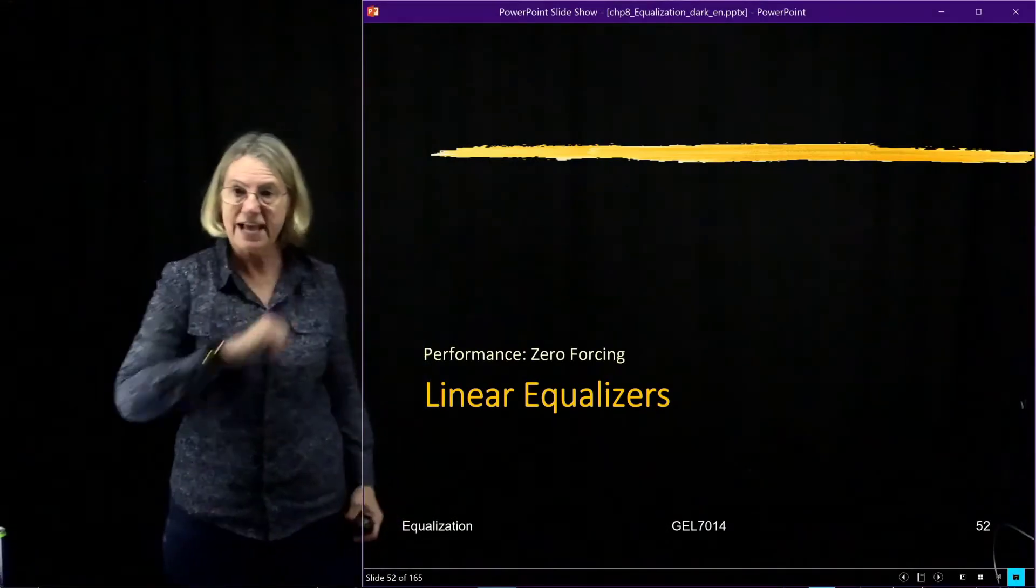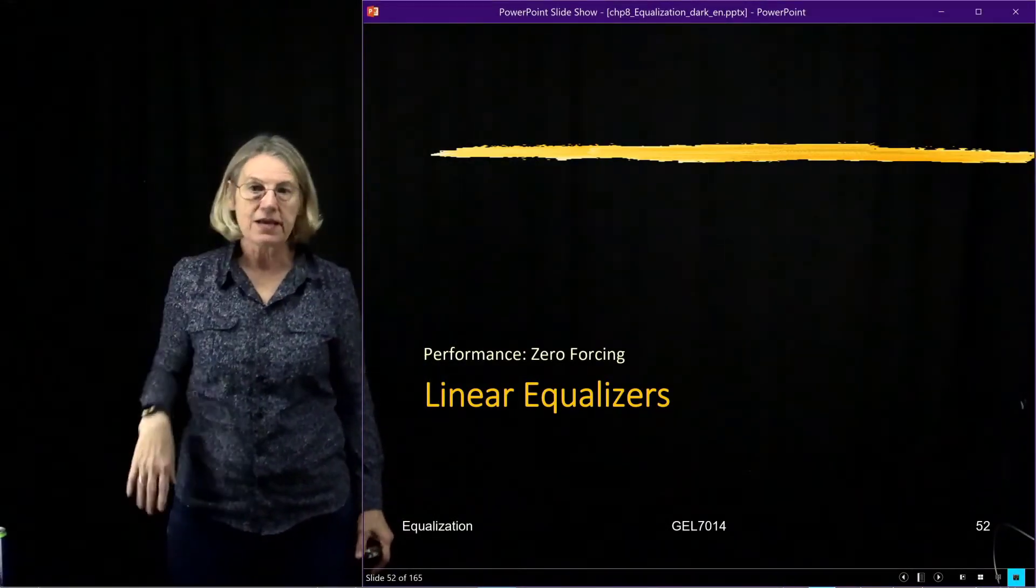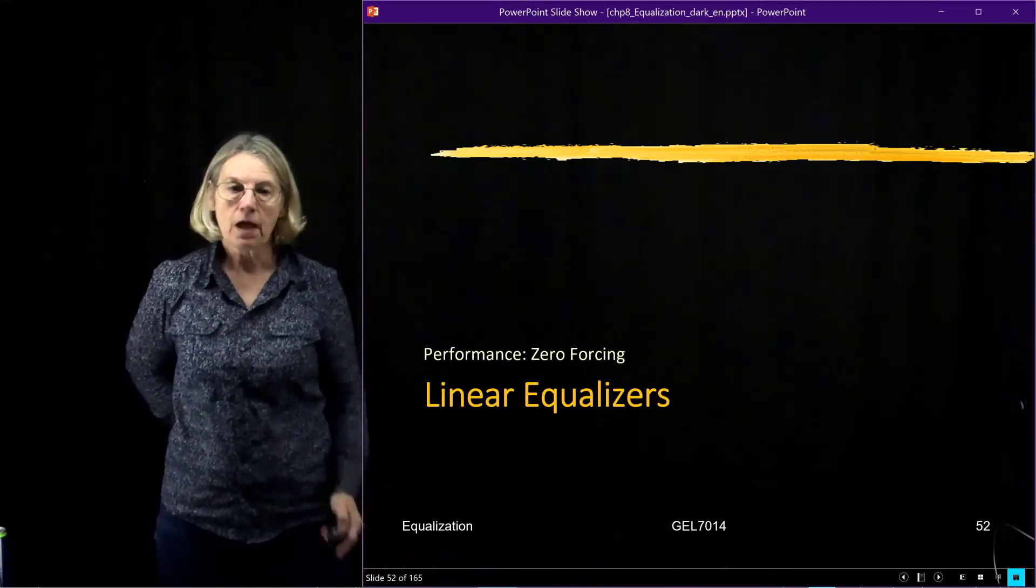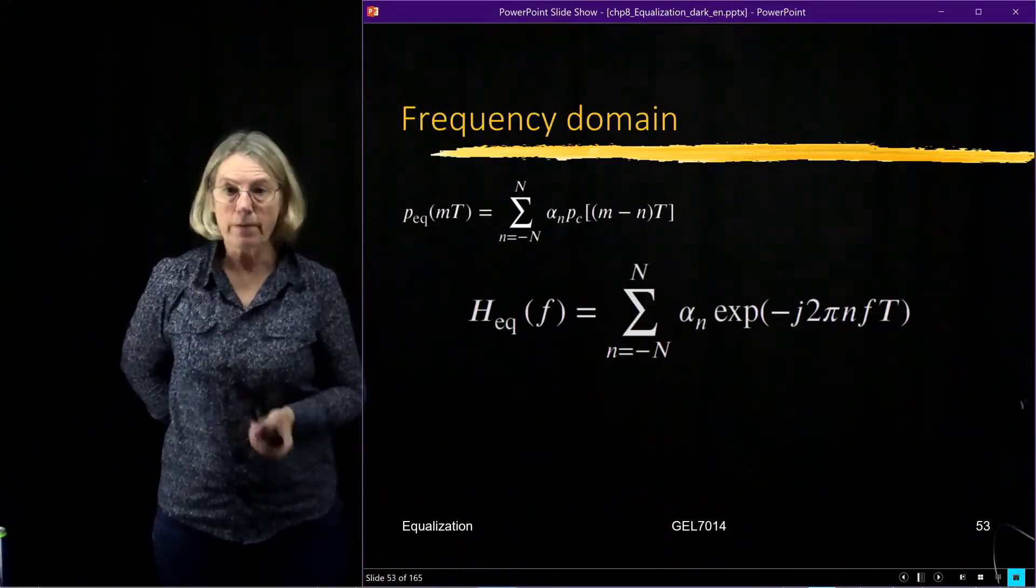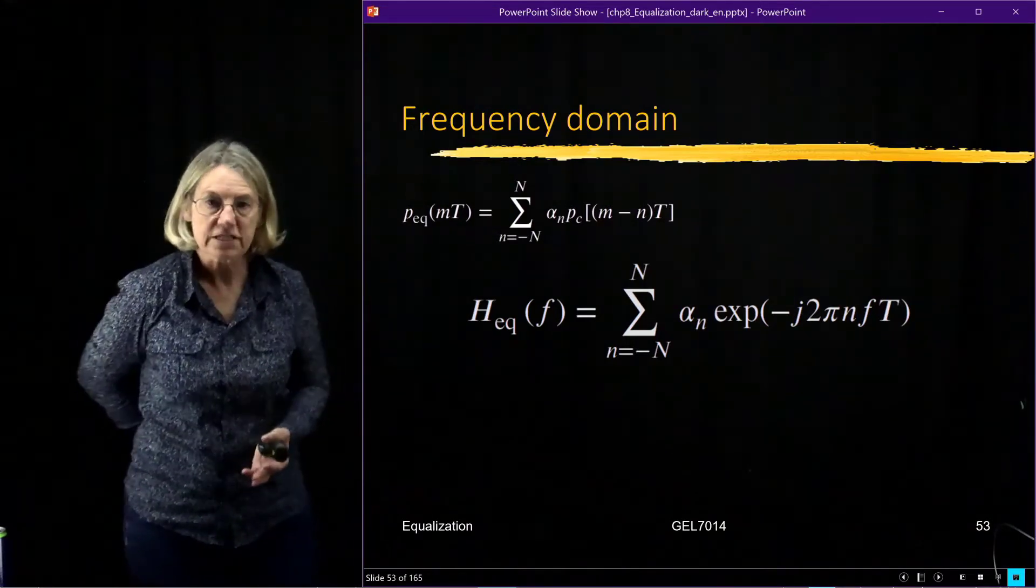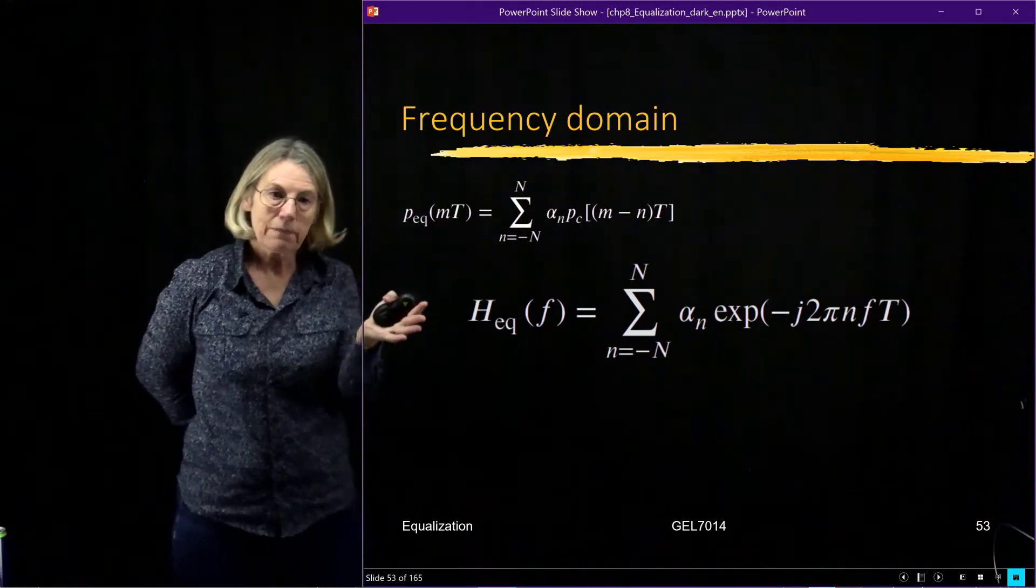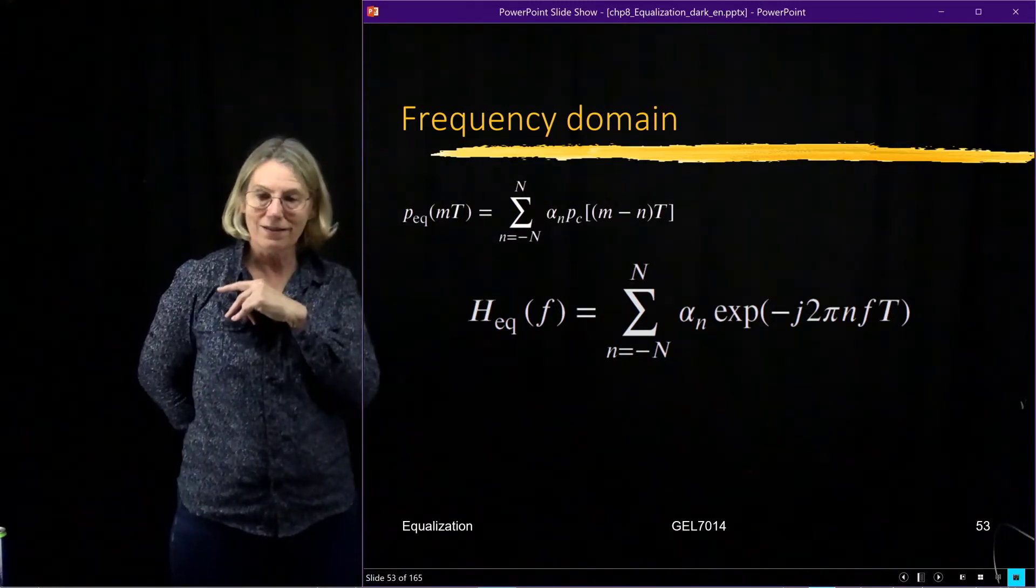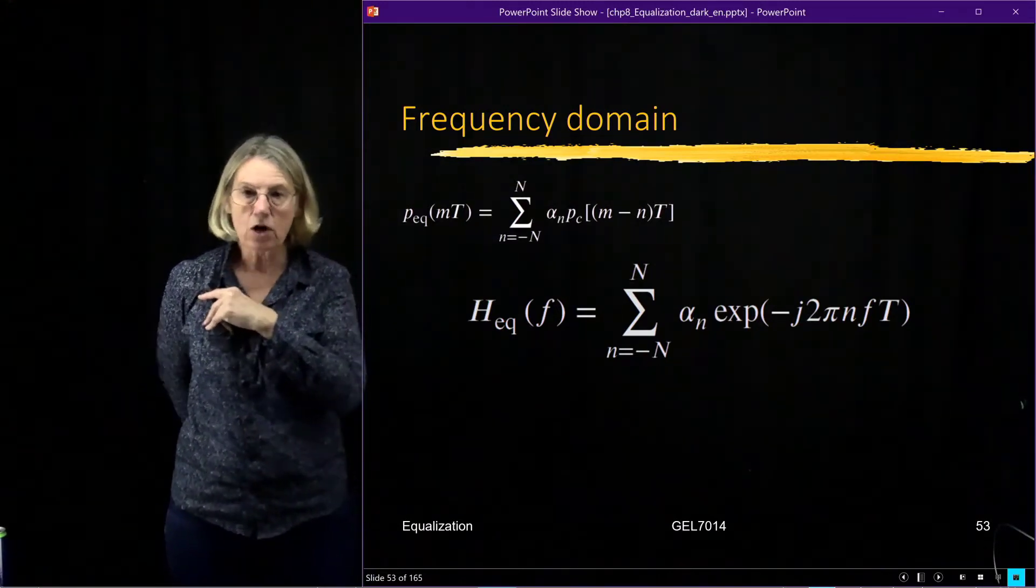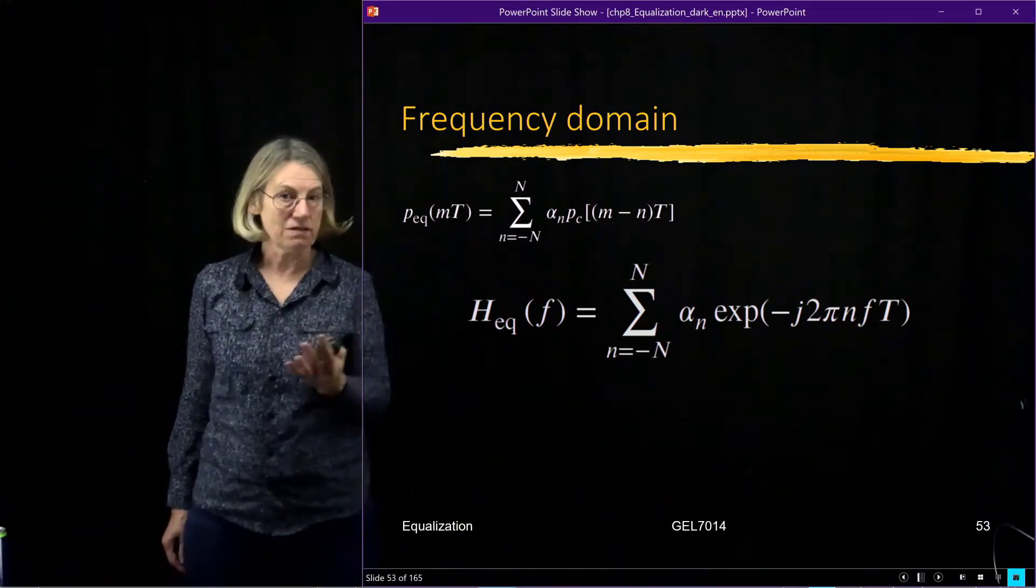So we have this channel, we found exactly what the coefficients were for this three tap zero forcing equalizer, and now let's look at the performance. Well in general we can look at the performance of a zero forcing equalizer by looking at what's going on in the frequency domain because we know that in the frequency domain we're getting some enhancement of the noise.